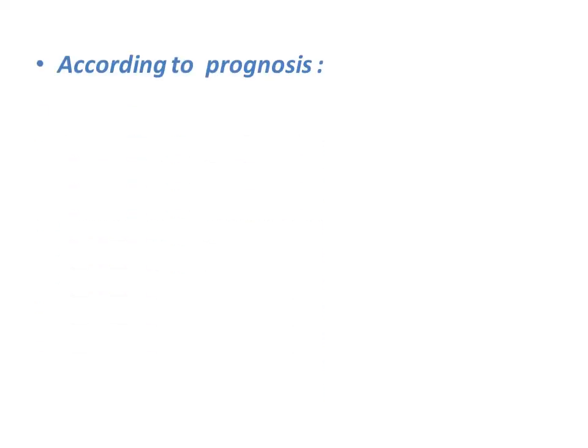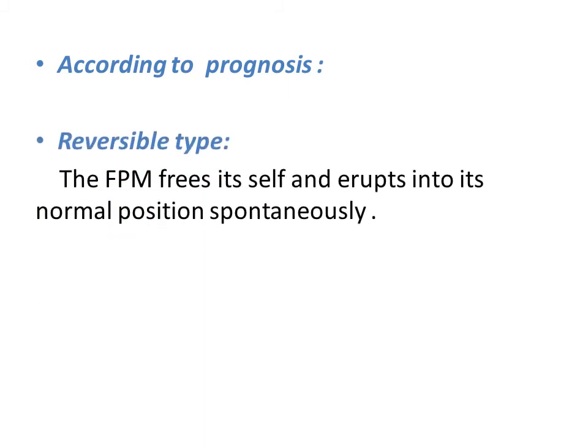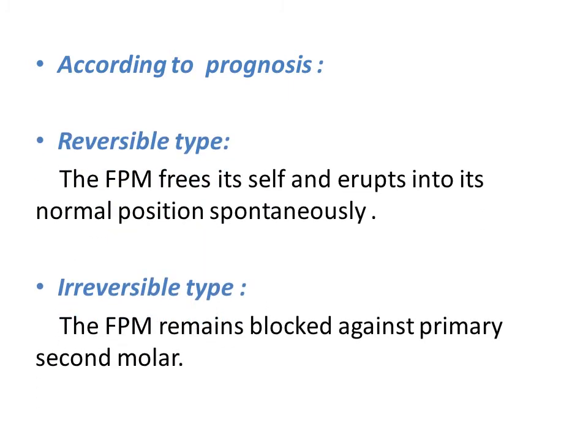According to prognosis, ectopic eruption is classified into reversible type and irreversible type. The reversible type, fortunately, is the common one. Here, the first permanent molar frees itself and erupts into its normal position spontaneously.